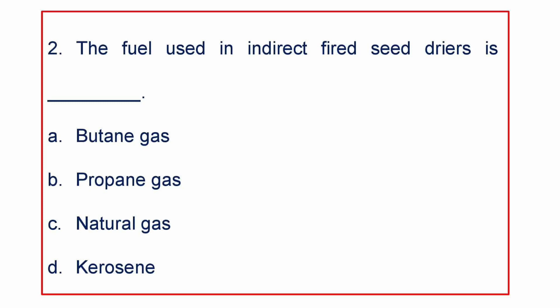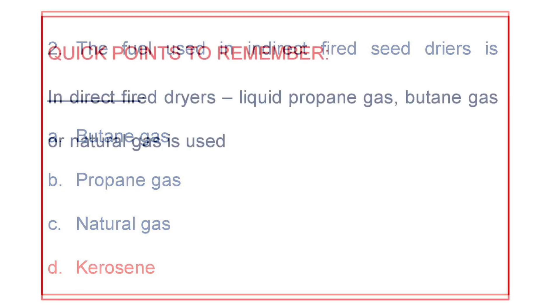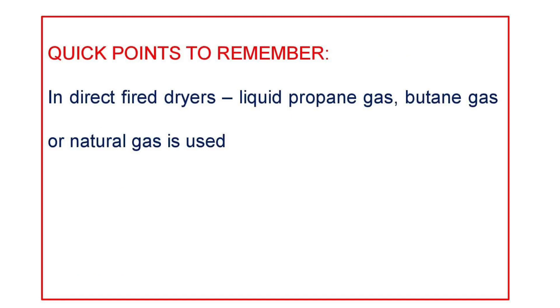Next question: The fuel used in indirect fired seed dryers is A. Butane gas, B. Propane gas, C. Natural gas, or D. Kerosene. The answer is Kerosene. One important point to remember is that in direct fired dryers we use liquid propane gas, butane gas, or natural gas.